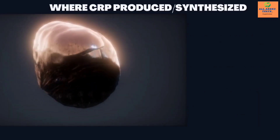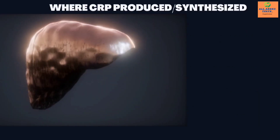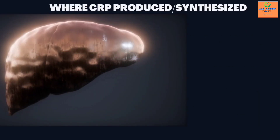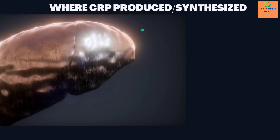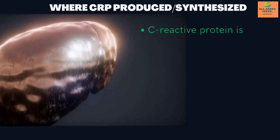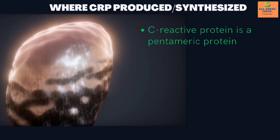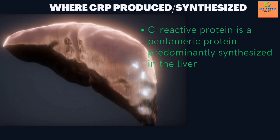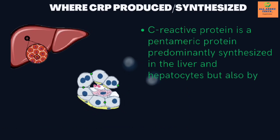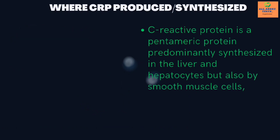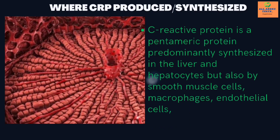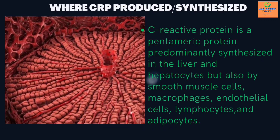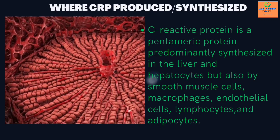Where is CRP produced and synthesized? C-reactive protein is a pentameric protein predominantly synthesized in the liver and hepatocytes, but also by smooth muscle cells, macrophages, endothelial cells, lymphocytes, and adipocytes.